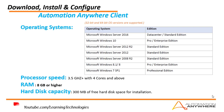Now we will see the hardware and software requirements — the OS requirements — to install the Automation Anywhere Client. For the operating system, there are many more options compared to the Control Room: Microsoft Windows 7 SP1, 8.1, Windows Server 2008 R2, Windows Server 2012, Windows Server 2012 R2, Windows 10, and Windows Server 2016. These are all the supported operating systems.